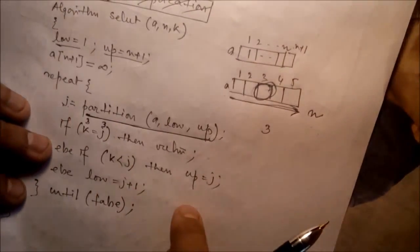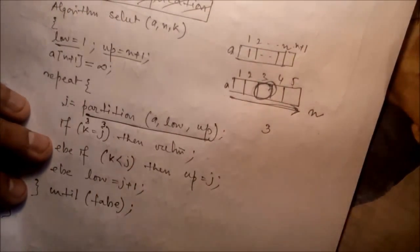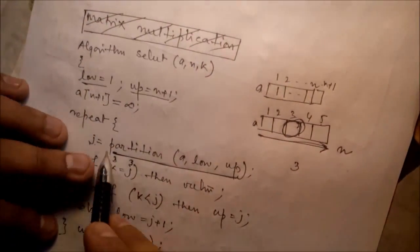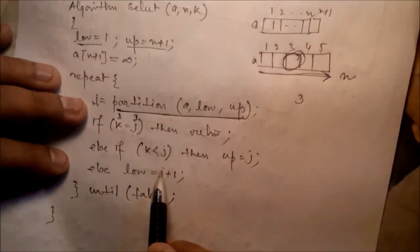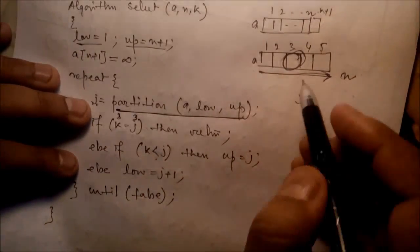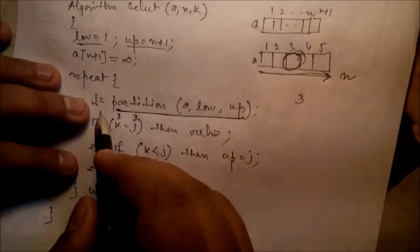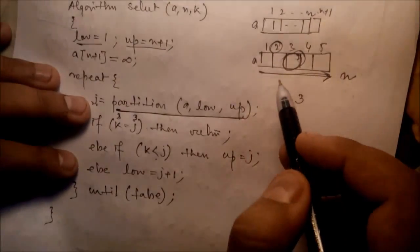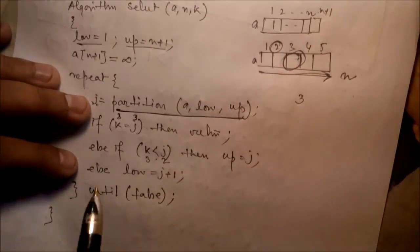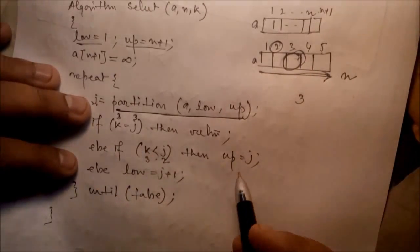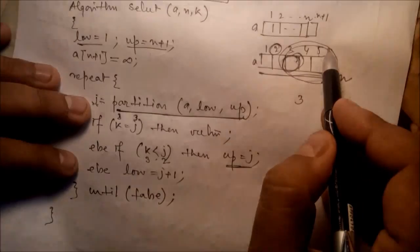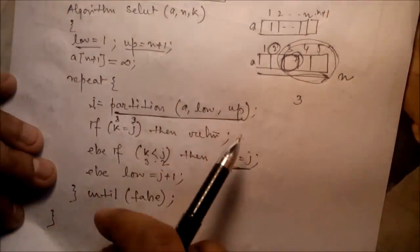If you are not lucky the first time, compare the returned j with the expected median index K. Suppose the partition returned j=2 but you want K=3. In that case, you update the lower or upper bound and search only the relevant sub-portion, applying the same partition concept again.